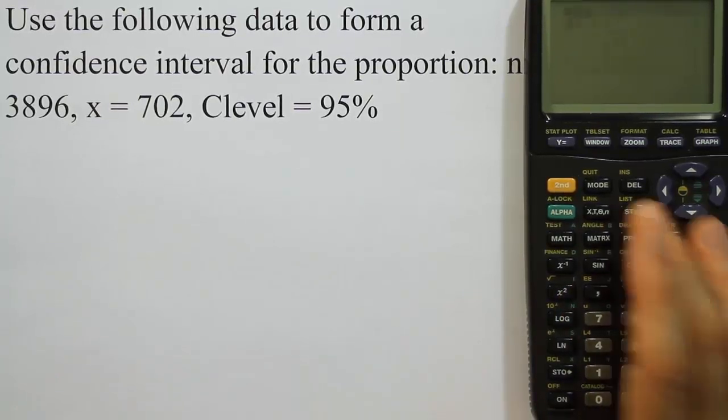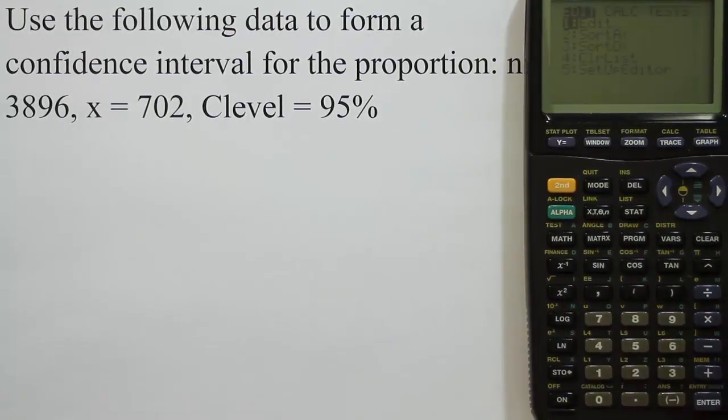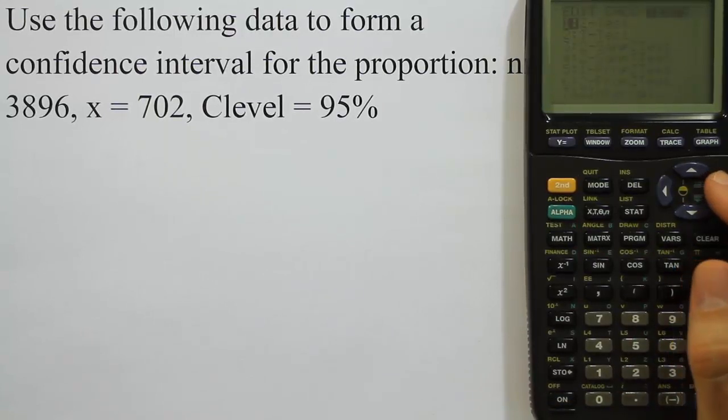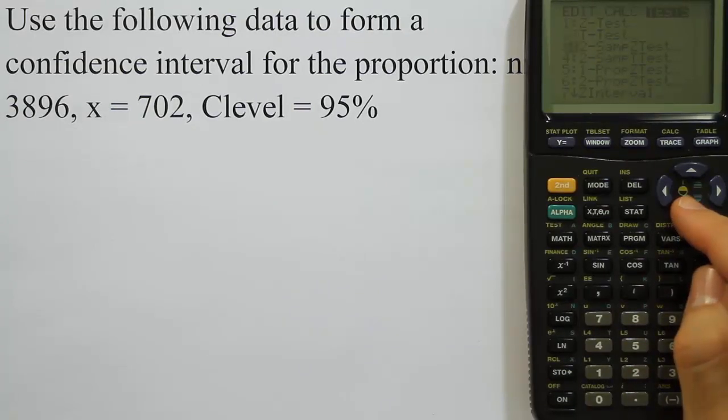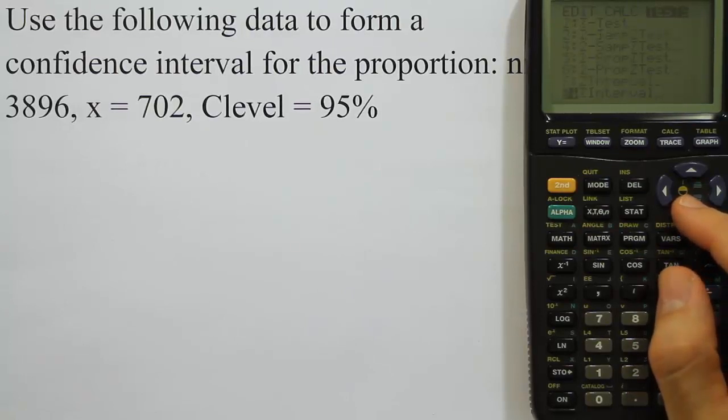So here's how we get there. We hit stat. And then once you press stat, you arrow over to where it says tests. And we're going to scroll down until we see the one proportion interval, one proportion z interval. So we have to scroll past all of this information.